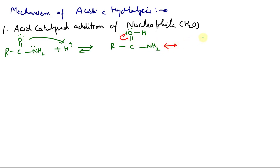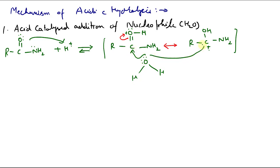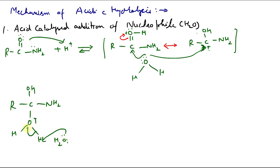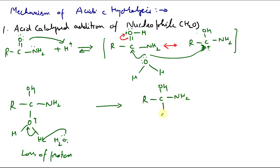We can show the resonating structure as R-C(OH)(=NH₂⁺). In the next step, water can now add to this electrophilic carbon. After water addition and deprotonation — loss of a proton to regenerate the acid — we obtain the tetrahedral intermediate R-C(OH)(OH)(NH₂). So this tetrahedral intermediate is formed, and this mechanism is exactly the same as hydrolysis of esters.